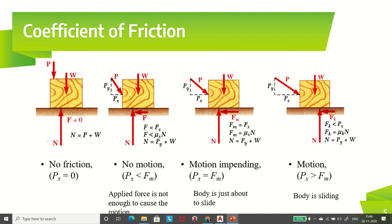With the help of this force diagram, we can understand a few things. When a force P is applied on the body in the vertical downward direction, there will be no friction, since the horizontal component of that force is zero. The condition of equilibrium gives: normal reaction equals P plus W, and friction force equals zero because there is no other horizontal force.